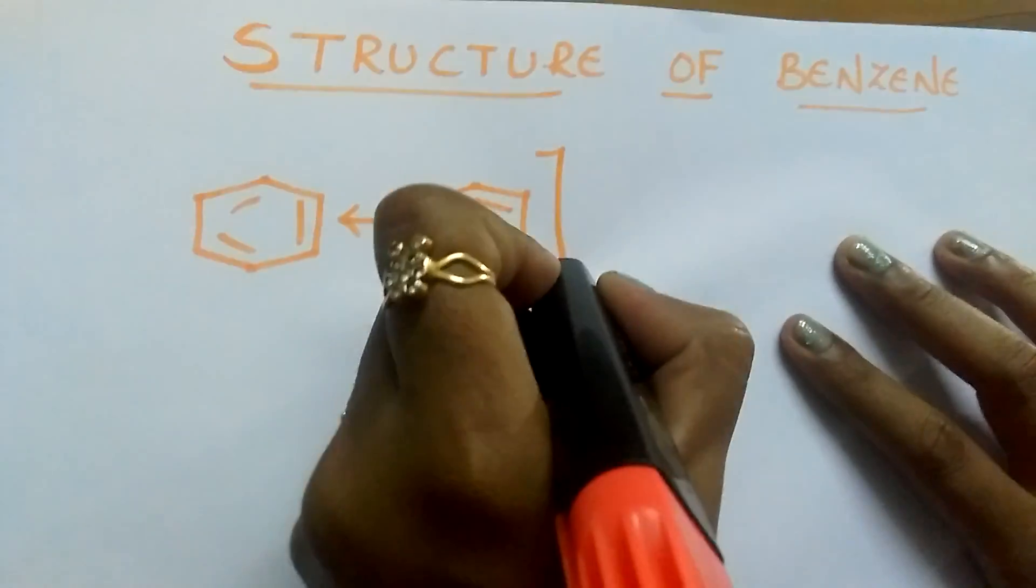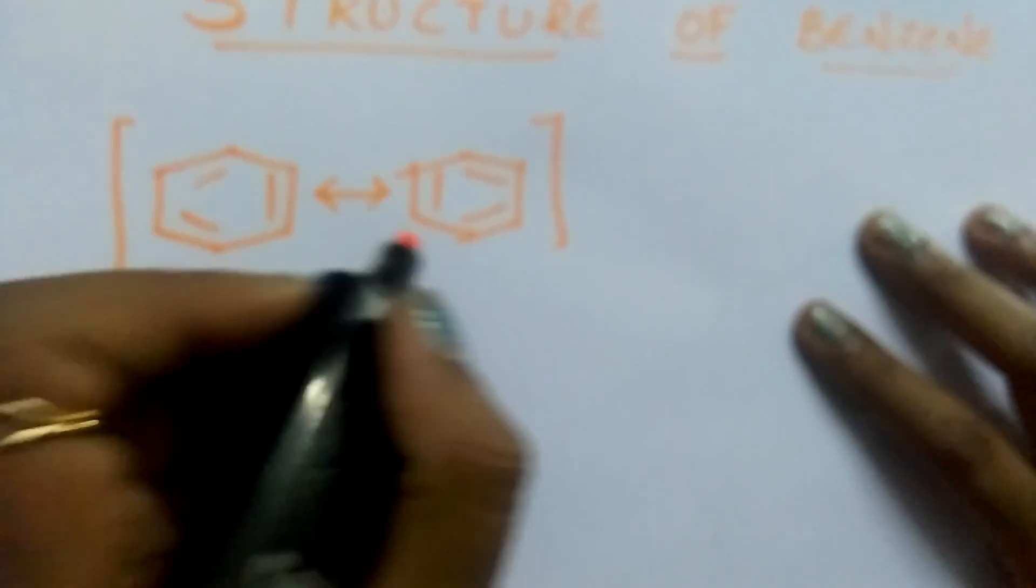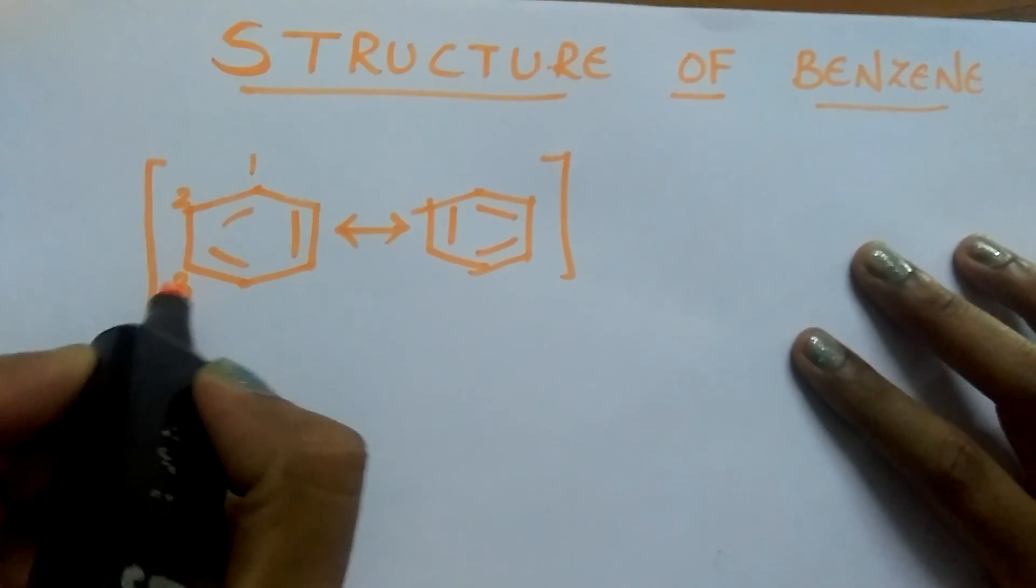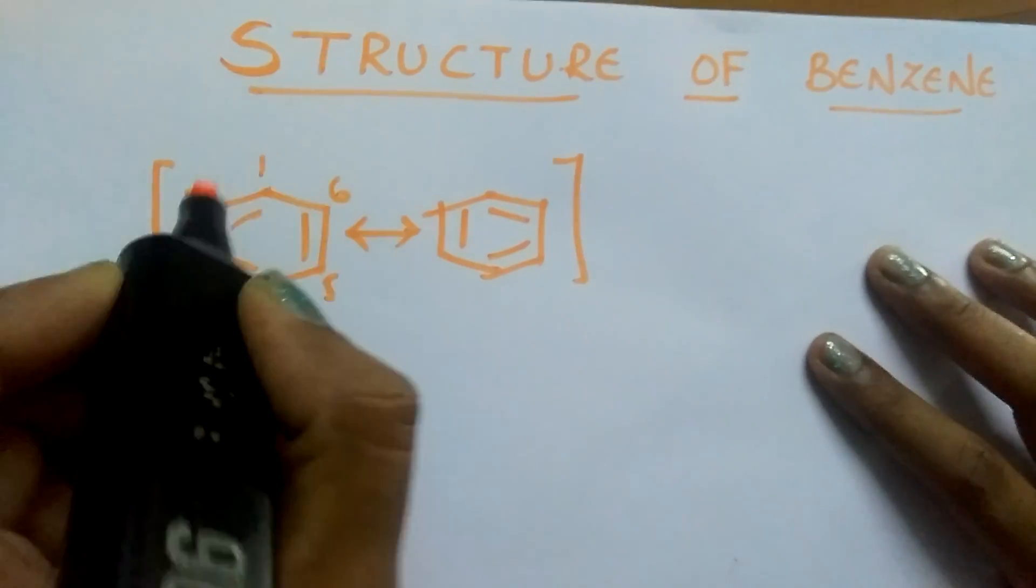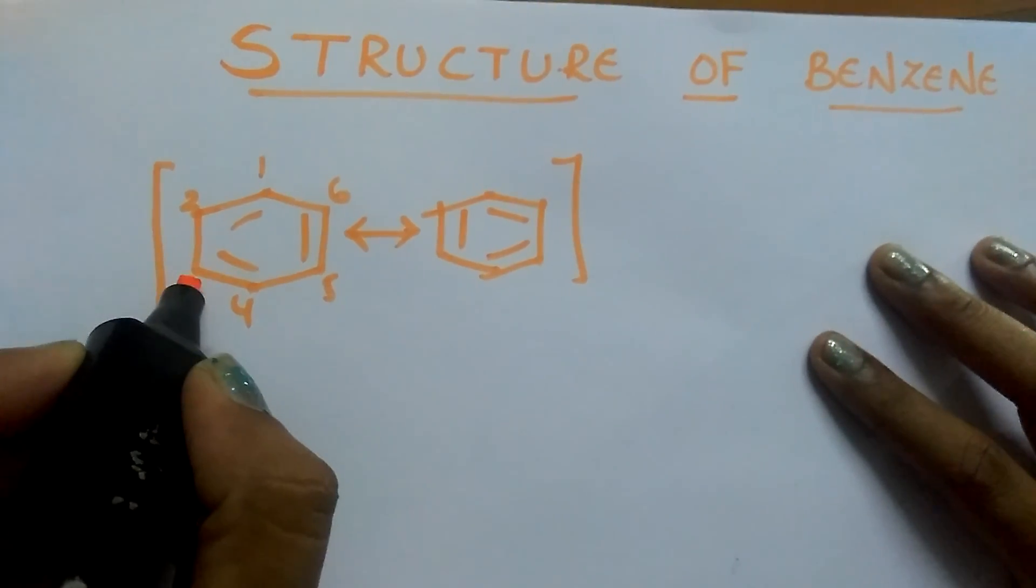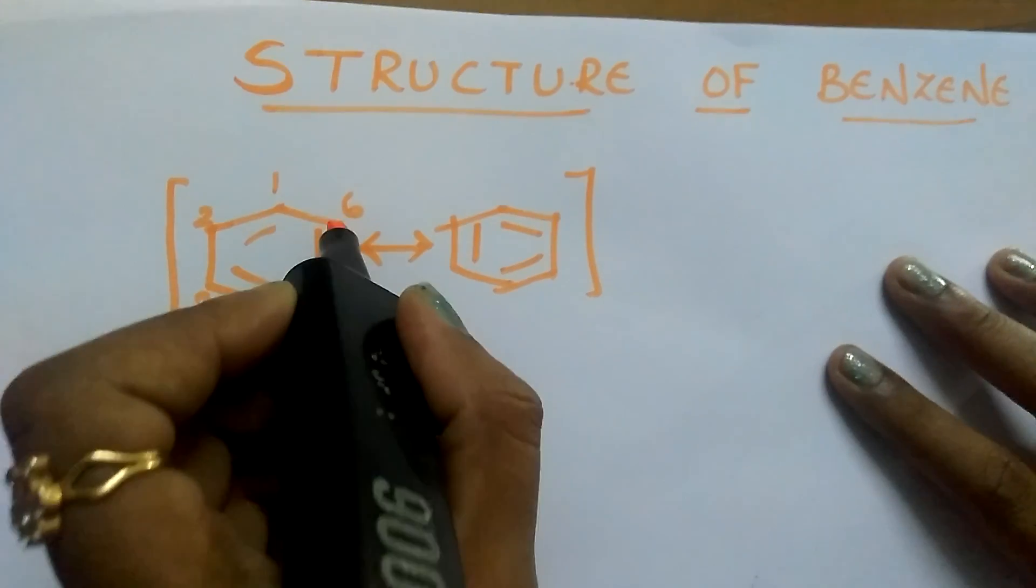These two are the structures which are oscillating each other. In the first structure, the pi bond is present between the first carbon, second carbon, third, fourth, and fifth and sixth.